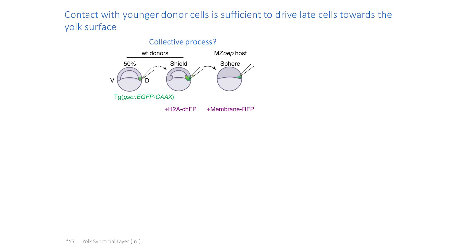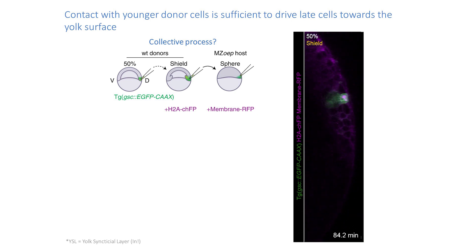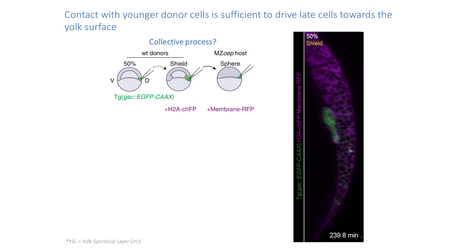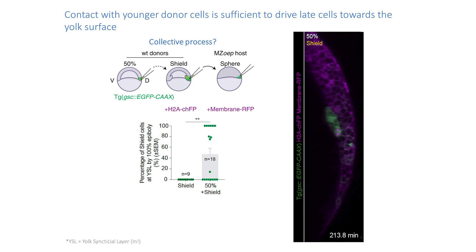To test this idea we collected in the same transplant the early cells — the putative leader cells — and the later cells — the putative followers — and asked: if we combine later cells with early cells, can all of the cells now go to the inside of the embryo? In one such transplant you can see the later cells here and the early cells becoming more green, and by the end of the movie the entire cluster has moved to the inside of the embryo.